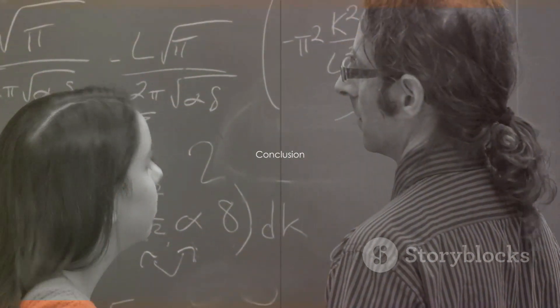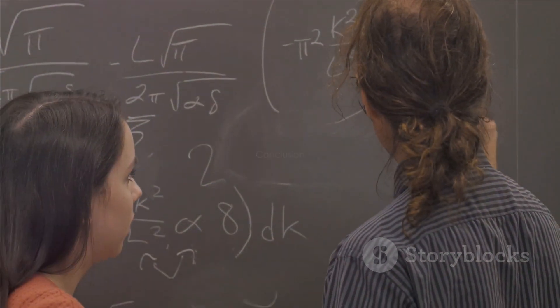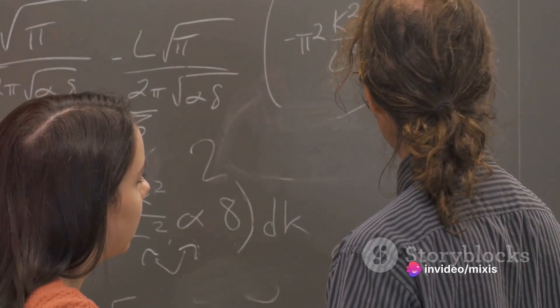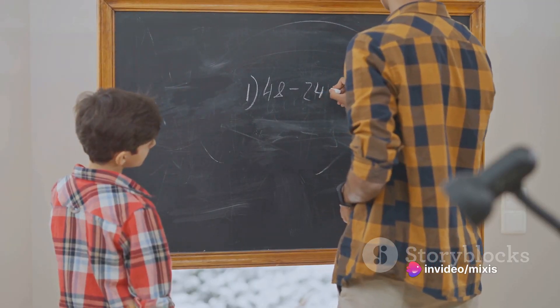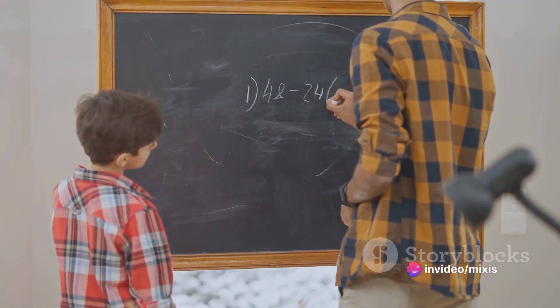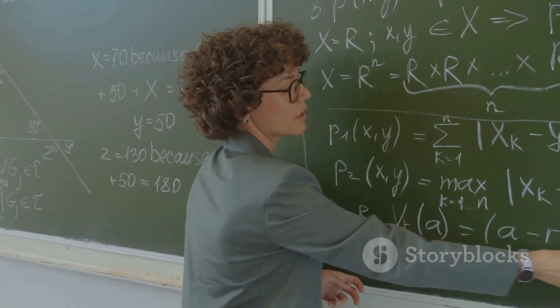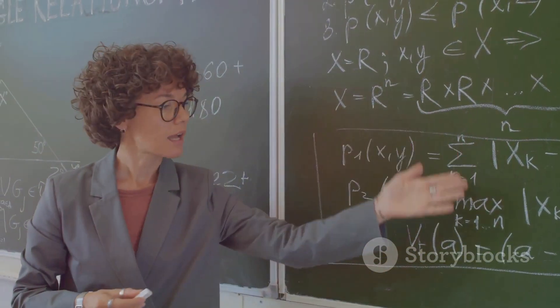So remember, a function is one-to-one if each element in the domain maps to a unique element in the range. This means that no two different inputs will yield the same output. This property makes these functions key in defining inverse functions.